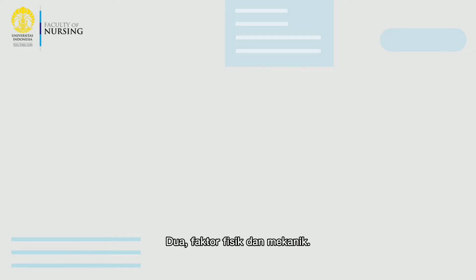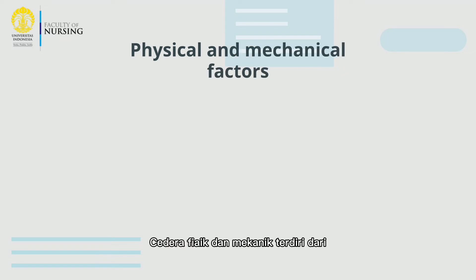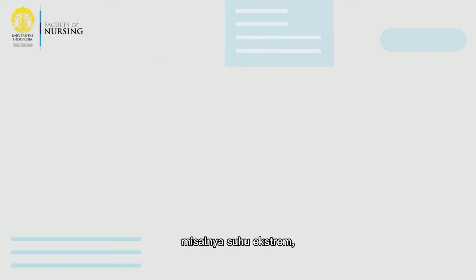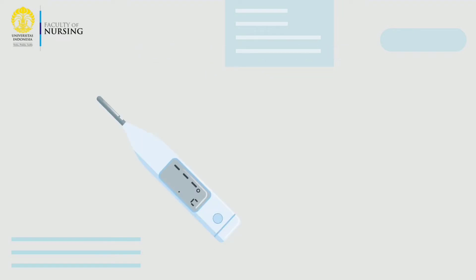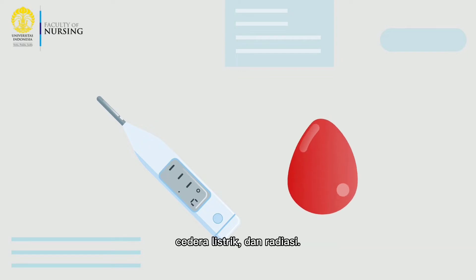In addition, there are physical and mechanical factors. Physical and mechanical injury consists of several factors, for instance: extreme temperature, sudden change in atmospheric pressure, mechanical trauma, electrical injury, and radiation.